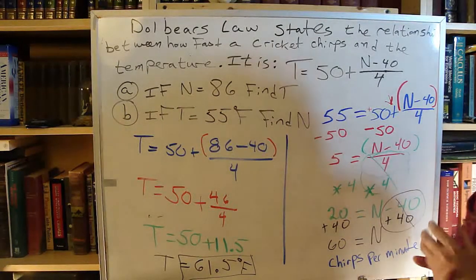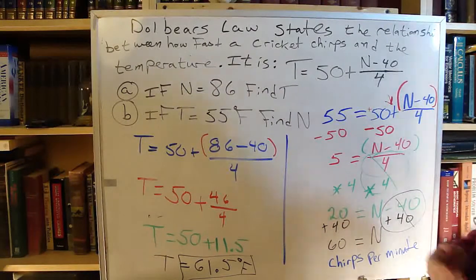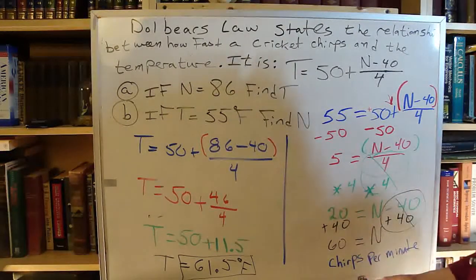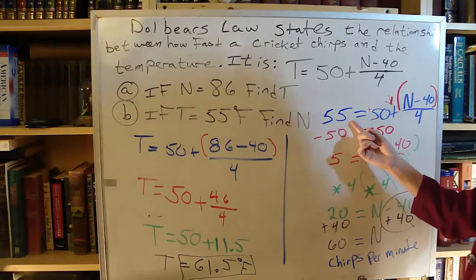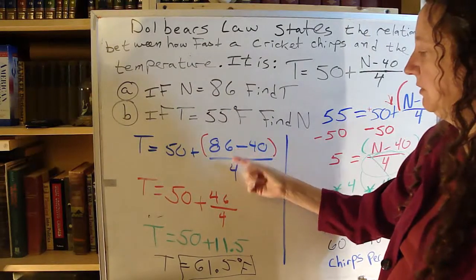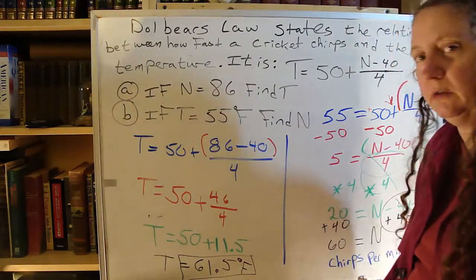So if you're outside, and it's cold, and you want to count the chirps because you want to know how cold it is, and you count 60 chirps, that's 55. If you count 86 chirps, then it's 61.5.